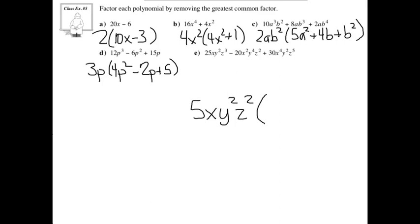So when you divide these, you're going to have 5z for the first term, minus 4xy squared for the next one. And when you divide 30x to the power of 4 y squared z to the power of 5 by 5xy squared z squared, you're going to end up with 6x to the power of 3 z to the power of 3.